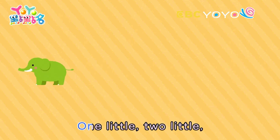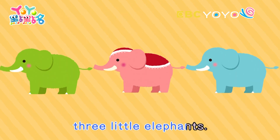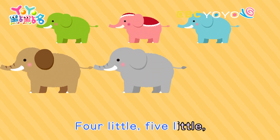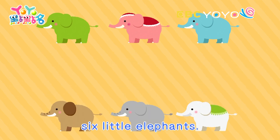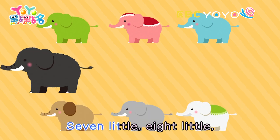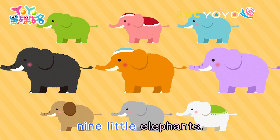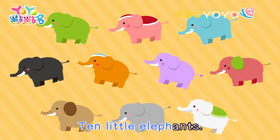One little, two little, three little elephants. Four little, five little, six little elephants. Seven little, eight little, nine little elephants. Ten little elephants.